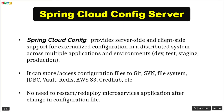Spring Cloud Config provides server-side and client-side support for externalized configuration in a distributed system across multiple applications and environments. Spring Cloud Config Server can store and access configuration files from Git, SVN, file system, JDBC, Vault, Redis, AWS S3, CredHub, and more. In this video we will be using a Git-backed system, so we don't need to redeploy or restart a microservice when its configuration changes.